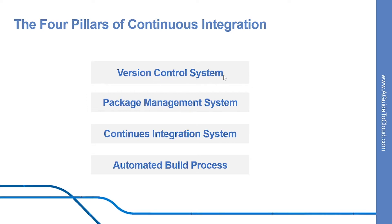A version control system manages changes to your source control over time, which includes Git, Apache Subversion, Team Foundation Version Control, etc. A package management system is used to install, uninstall, and manage software packages. This includes NuGet, Node Package Manager, Chocolatey, Homebrew, RPM, etc.